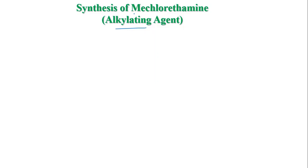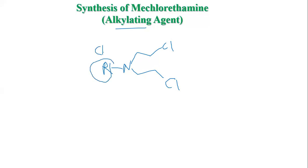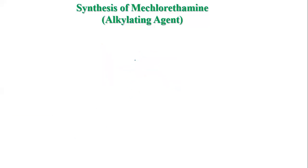As the name of the drug is Mechlorethamine, as per the general structural formula that we have already discussed in SAR, this is the general structural formula of alkylating agents. So if it is Mechlorethamine, here instead of R, there must be a methyl amine, that is CH3. So overall, the structure of that specific drug will look like: N will be there, CH3 will be there, and these are the two arms — that is chloroethyl arms. So this is the structure.